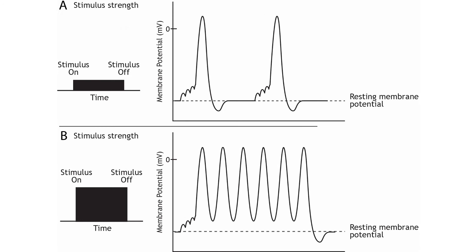The strength of a stimulus needs to be encoded by the neurons. We need to be able to perceive the difference, for example, between a dim light and a bright one. The frequency or rate of action potential firing informs the nervous system of stimulus strength. Since the height of the action potential is always the same for a given neuron, the strength of the stimulus is determined by the frequency of action potential firing. A weak stimulus would cause fewer action potentials to be fired than a strong stimulus.